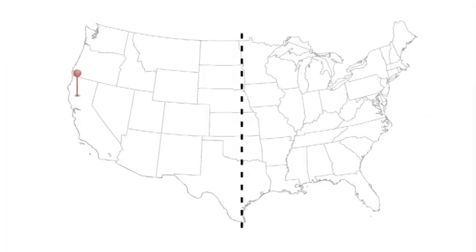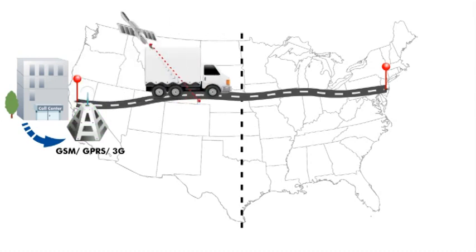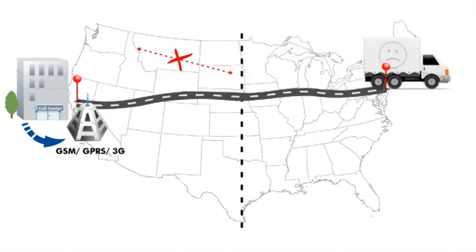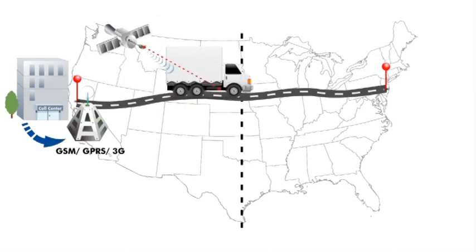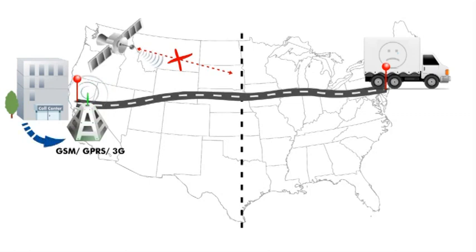When you are driving through the countryside, what happens if you need to report your status to the fleet center? No GPS signal? Why? Because you are in an area where your telecom carrier base station cannot cover.